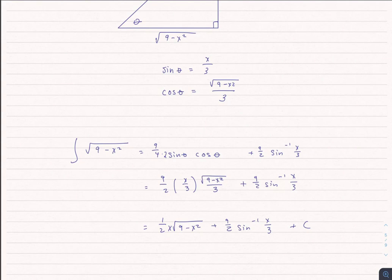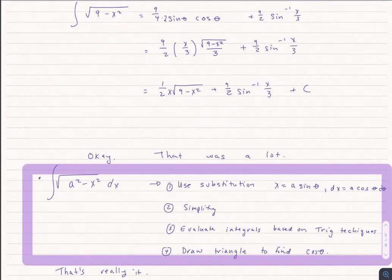Let's take a step back and look at what we did. We saw something in the form a squared minus x squared under a square root. Whenever we see this form, we use the substitution x equals a sine theta. The dx automatically becomes a cosine theta d theta. We simplify, evaluate integrals using trig techniques from the last section, and draw a triangle to find cosine. Those are really the basic steps to this kind of trig substitution.